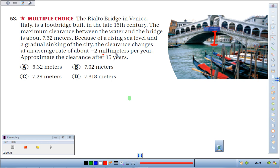if it goes down 2 millimeters per year, we multiply that by 15 years, it's going to go down 30 millimeters.